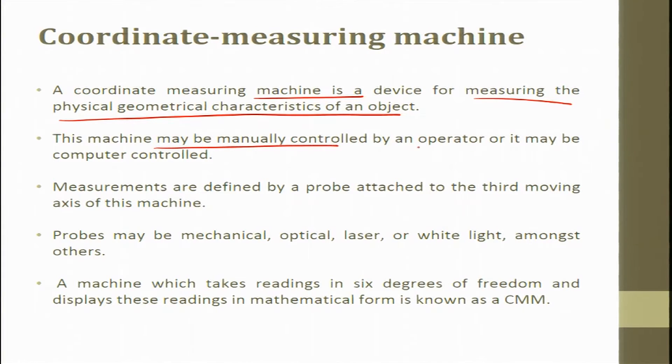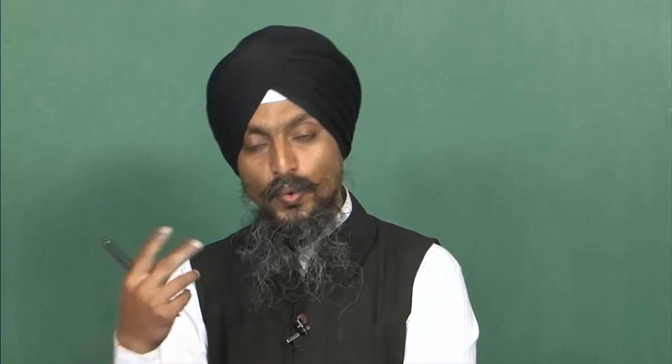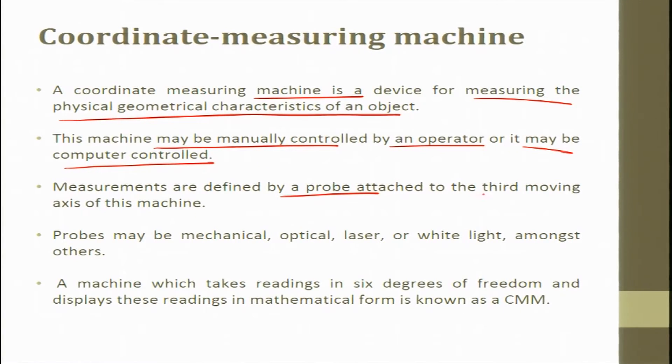This machine may be manually controlled by an operator or it may be computer controlled. We will show both operations — manual control using a joystick and CNC mode. CNC mode is computer numerical control: we give the initial point and define the distance — say after each mm or 2mm — and it records the points on a specific plane or curve. Measurements are defined by a probe attached to the third moving axis — the x, y, and z axes.